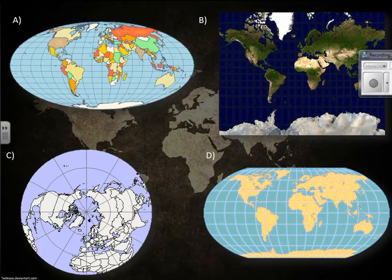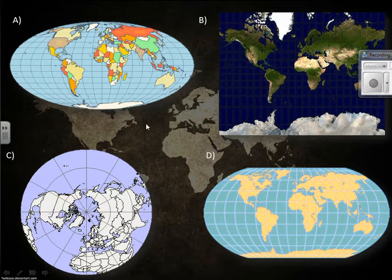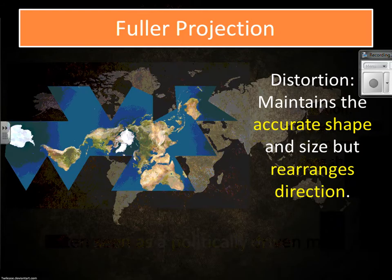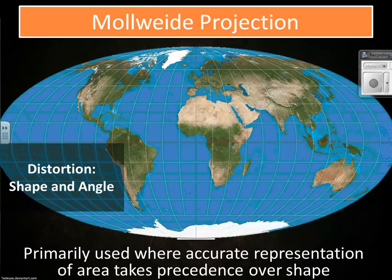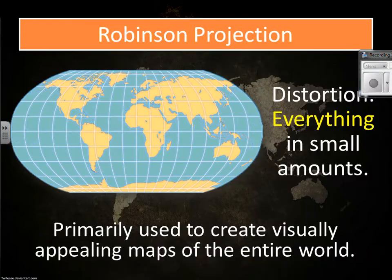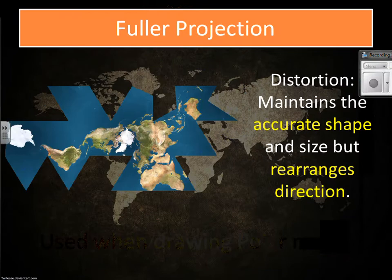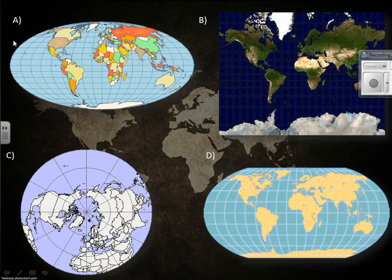Here's a quiz based on what we just talked about. Some are easy because you were given the actual picture; A is different, but see if you can figure out which one it looks most closely to. Your choices are Peters, Fuller, azimuthal equidistant, Robinson, Mollweide, and Mercator. A is Mollweide, B is Mercator, C is azimuthal equidistant, and D is Robinson.